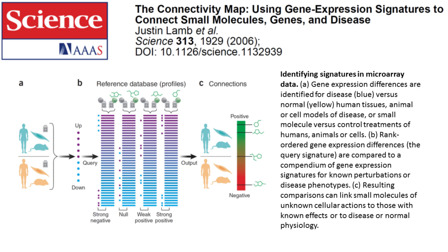The similarity or connectivity between a disease-derived gene expression signature and a drug-derived signature is calculated by a Kolmogorov-Smirnov statistic-like algorithm. Here, genes in the reference set need to be ranked based on their differential expression compared to the control, in order starting from the most upregulated genes to the most downregulated genes. However, the genes in the query set do not have to be ordered.